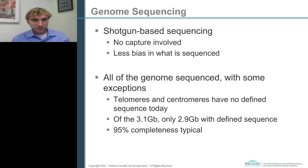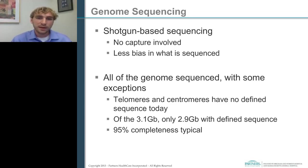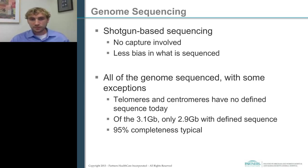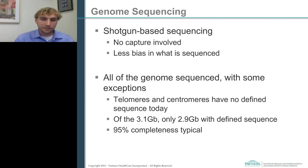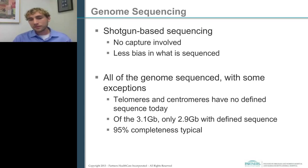Genome sequencing, on the other hand, doesn't involve capture — it's a shotgun-based sequencing method, so there's less bias in what is actually being sequenced. However, it's important to remember genome sequencing isn't necessarily whole genome sequencing. Today only about 2.9 gigabases of the 3.12 gigabases actually have defined sequence — the telomeres and centromeres don't have any defined sequence. Typically 95% completeness at 30 or 50x coverage is what you'll end up getting, but there's systematic and random dropout between different samples.